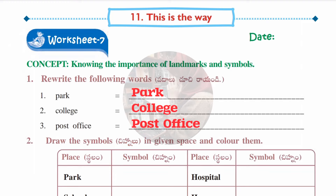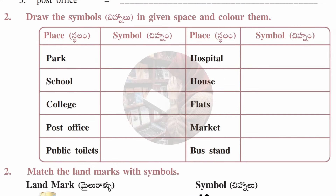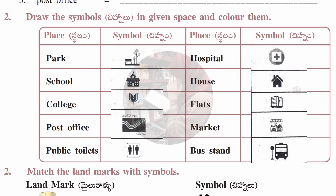Worksheet number seven — concept is 'Knowing the Importance of Landmarks and Symbols.' In the first section, rewrite three words neatly: Park, College, and Post Office. The second section asks you to draw the symbols in the given space and color them — according to each place listed, draw that place's symbol.